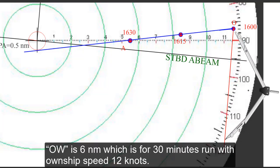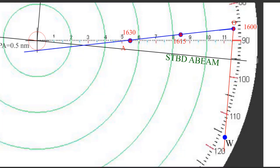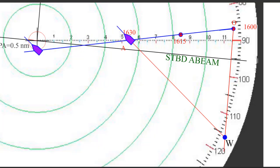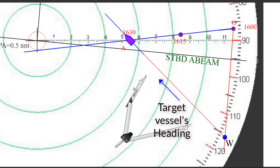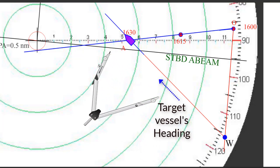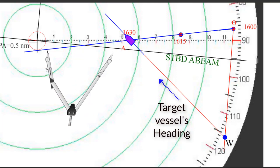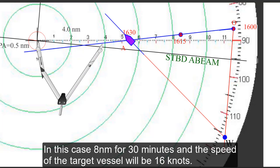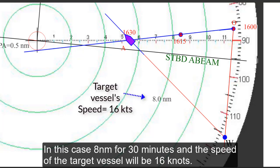O-W is 6 nautical miles which is a 30 minutes run with the own ship speed 12 knots. W-A is the direction of the target vessel and W-A length will represent the 30 minute run of the target vessel thus we can work out the speed of the target vessel.